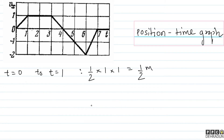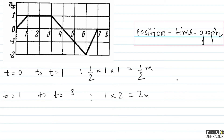Ab graph kaisa banega — is interval mein accelerated motion hai, velocity badhti ja rahi hai. Uske baad t = 1 se t = 3 tak constant velocity thi, velocity thi 1, aur 2 second ke liye gayi, toh displacement = 1 × 2 = 2 meters. Toh t = 1 par position half thi, t = 3 par position kya ho jaayegi — 2 plus half, matlab 2.5 meters.